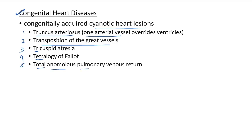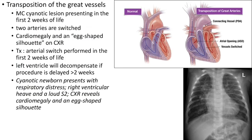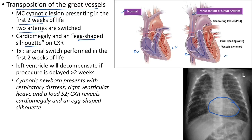Transposition of the great vessels is the most common cyanotic lesion presenting in the first two weeks of life. Two arteries are switched: the aorta arises from the right ventricle and the pulmonary artery arises from the left ventricle. Cardiomegaly and egg-shaped silhouette are the chest X-ray findings. In many cases there are connecting vessels like patent ductus arteriosus and atrial septal defect.